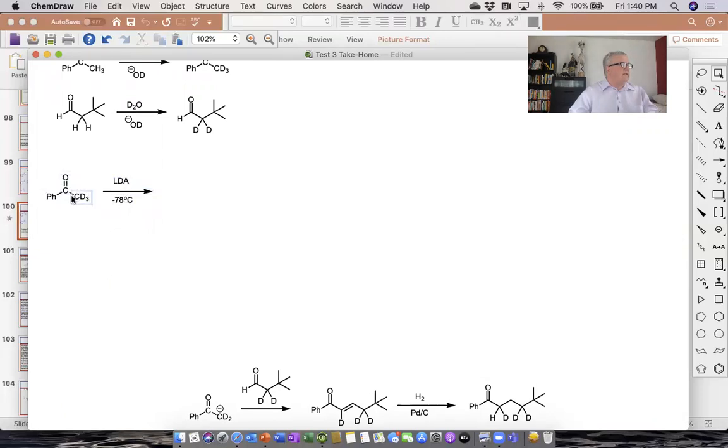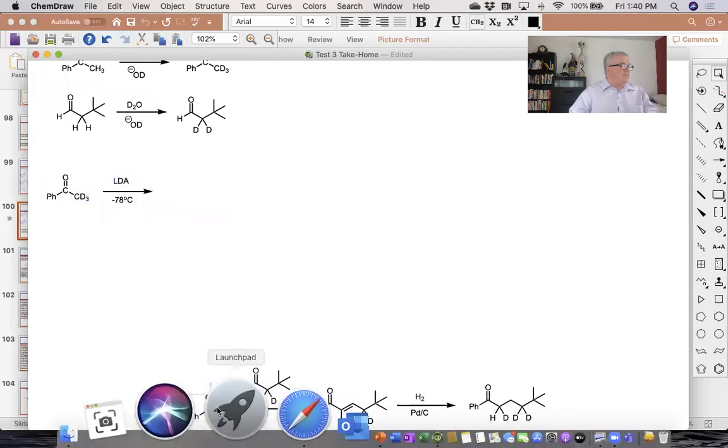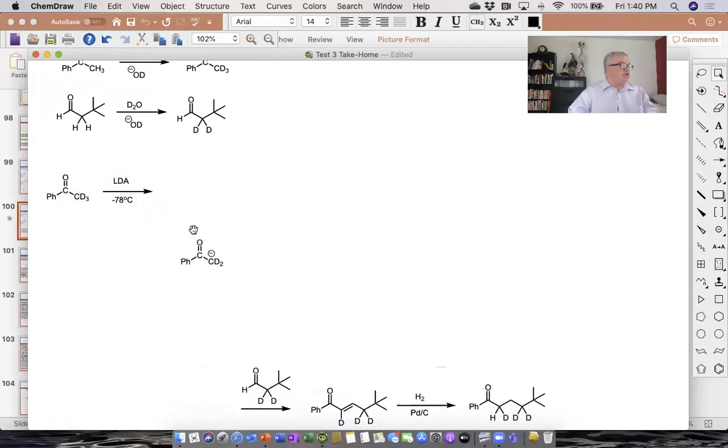We can take our deuterated acetophenone, react it with lithium diisopropylamide at minus 78 degrees, and that will pull off the acidic deuterium, not a proton, a deuterium in this instance, and we get the enolate. And all we have to do is slowly drop in our aldehyde, and we'll end up getting this compound.